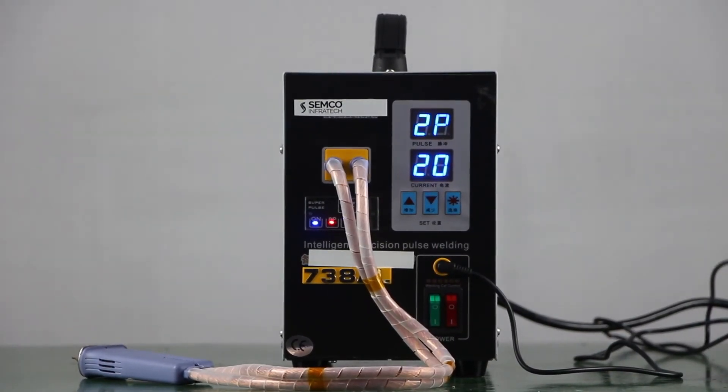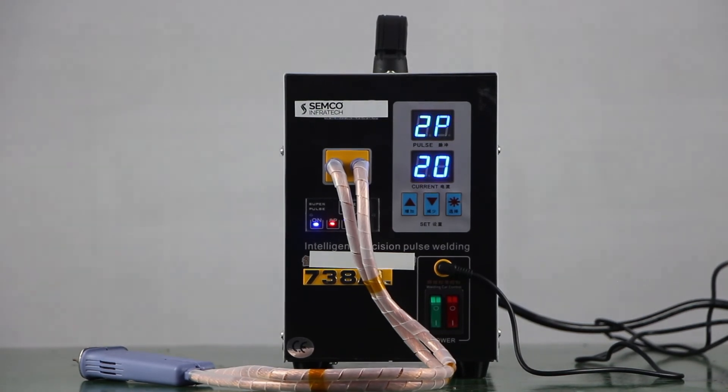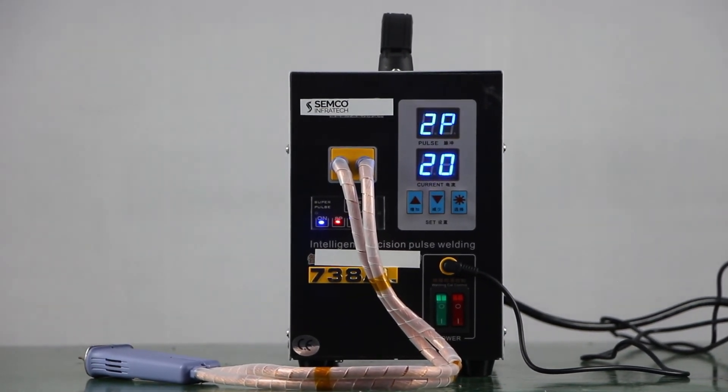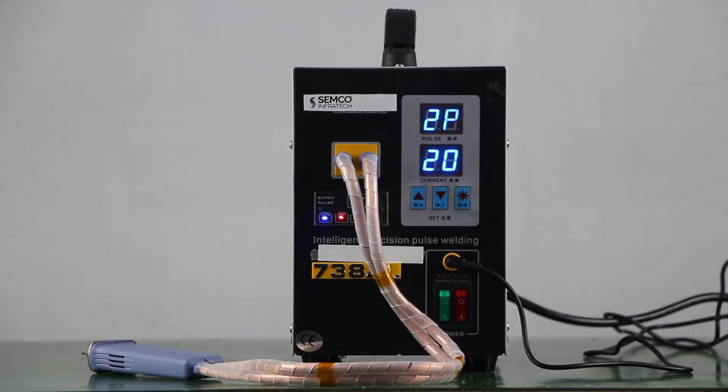So this was all about this spot welding hand welding machine, model number 738L. You can visit our head office for a live demo of this machine and many other machines.